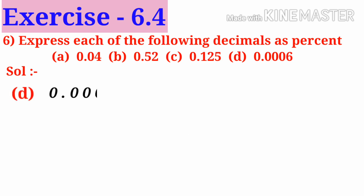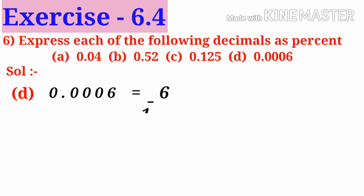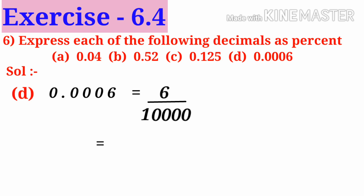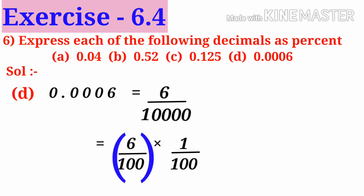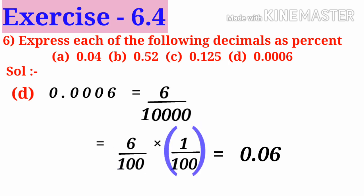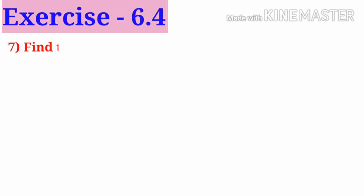D: 0.306. Observe that the non-zero number is 6, so write 6 in the numerator. Observe that there are four decimal places, so add four zeros after 1 in the denominator, that is 6 by 10,000. This can be written as 6 by 100 into 1 by 100. Now 6 by 100 is written as 0.06, and 1 by 100 is the percent symbol, so 0.06 percent.